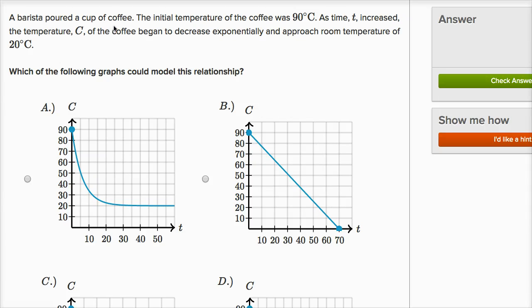A barista poured a cup of coffee. The initial temperature of the coffee was 90 degrees Celsius. As time T increased, the temperature C of the coffee began to decrease exponentially and approach room temperature of 20 degrees Celsius.